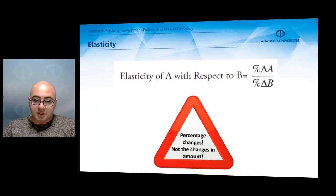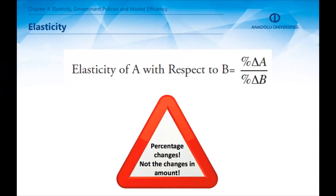Elasticity is measured using percentage changes. This means that changes in amounts can't measure elasticity. Because of that, all elasticity formulas use percentage changes. In the formula here, the triangle on the right of the percent sign represents change.